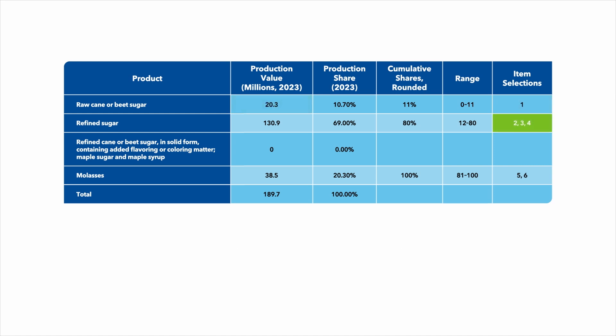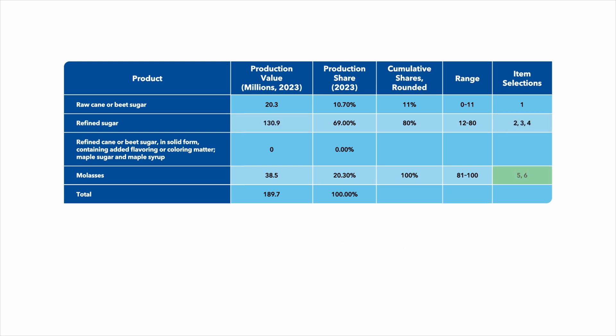For items 2, 3, and 4, we get the item weights as 130.9 million divided by 3. For items 5 and 6, we get the item weights as 38.5 million divided by 2 items, which gives us 19.25 million.